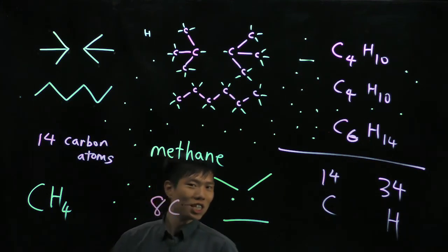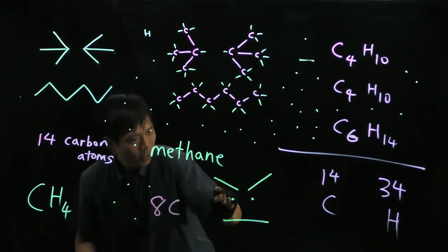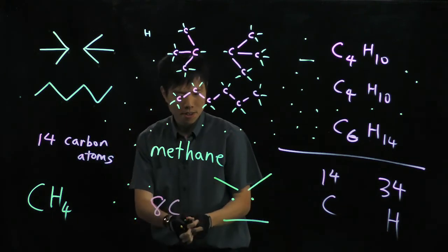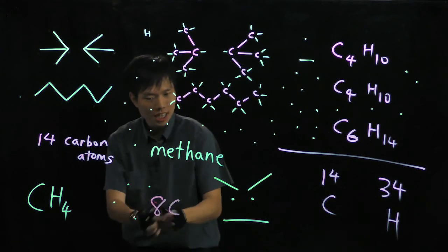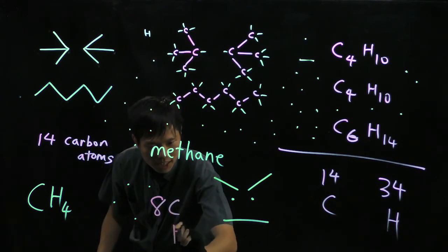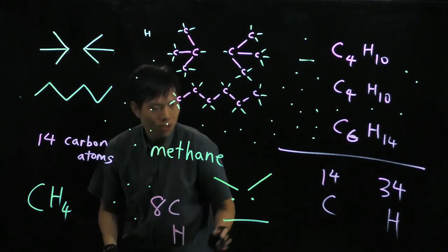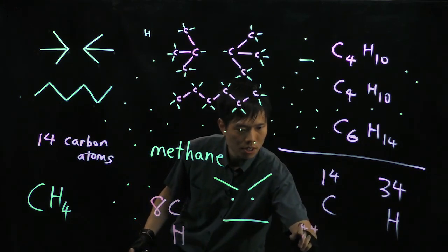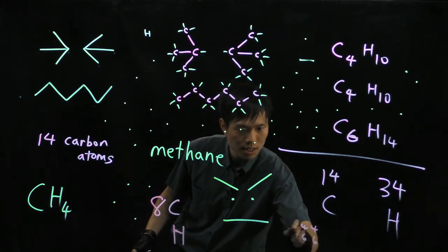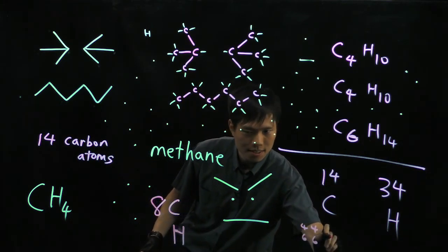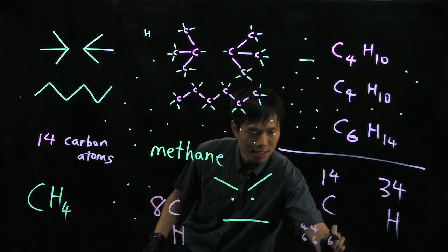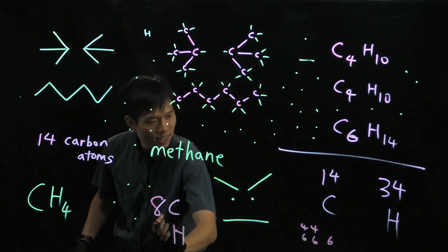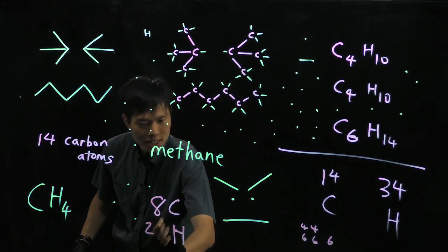And how many hydrogens? Counting through: 3, 3, 3, 3, 3, 4, 4. If you work it out slowly you can verify — you will have 4, 4, 6, 6, and 6, 6. That gives 26 hydrogens.